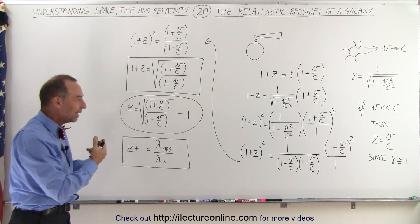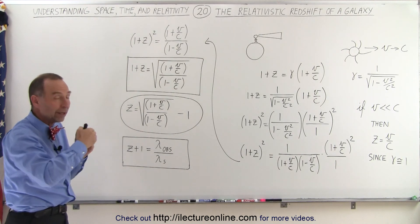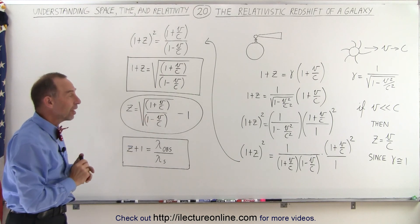z is what we call the z factor, which becomes very large as galaxies recede from us at very high velocities.